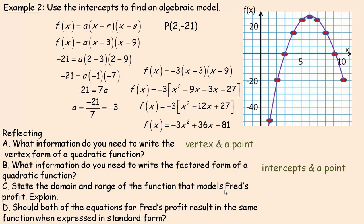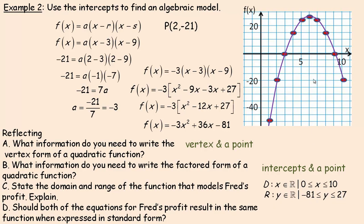The domain that models Fred's profit: the x values go from 0 (you can't make a negative number of hoverboards) up to 10, so domain is 0 to 10. For the range: the lowest profit is when x equals 0, giving negative 81 (a loss of $810,000), and the highest profit is 27 from the vertex (representing $270,000). Both equations result in the same standard form.